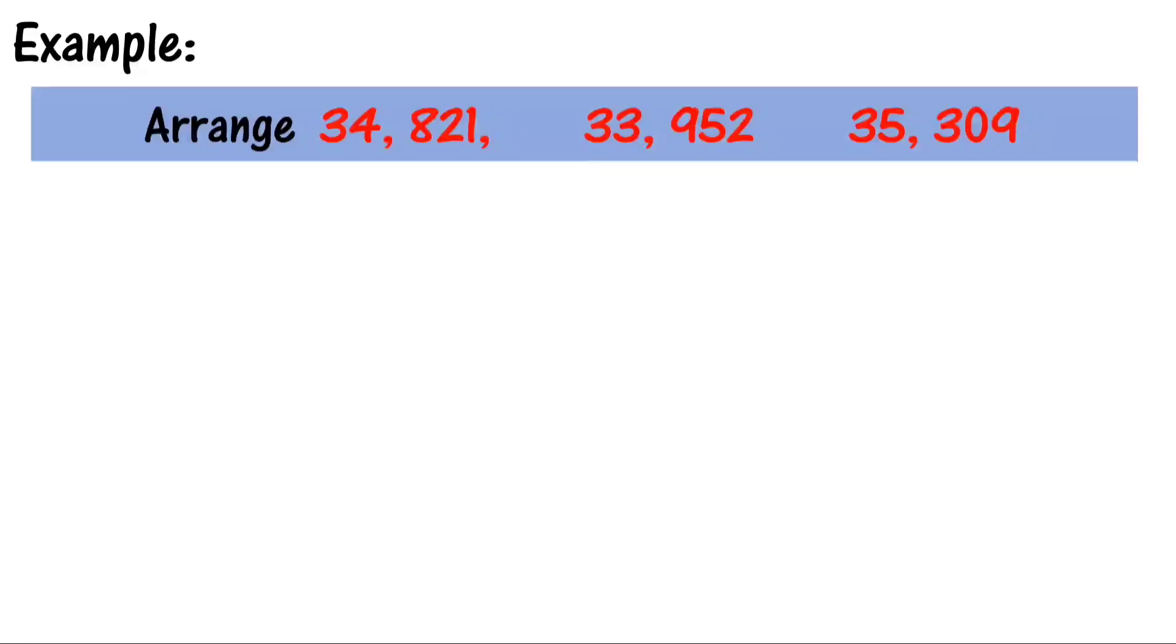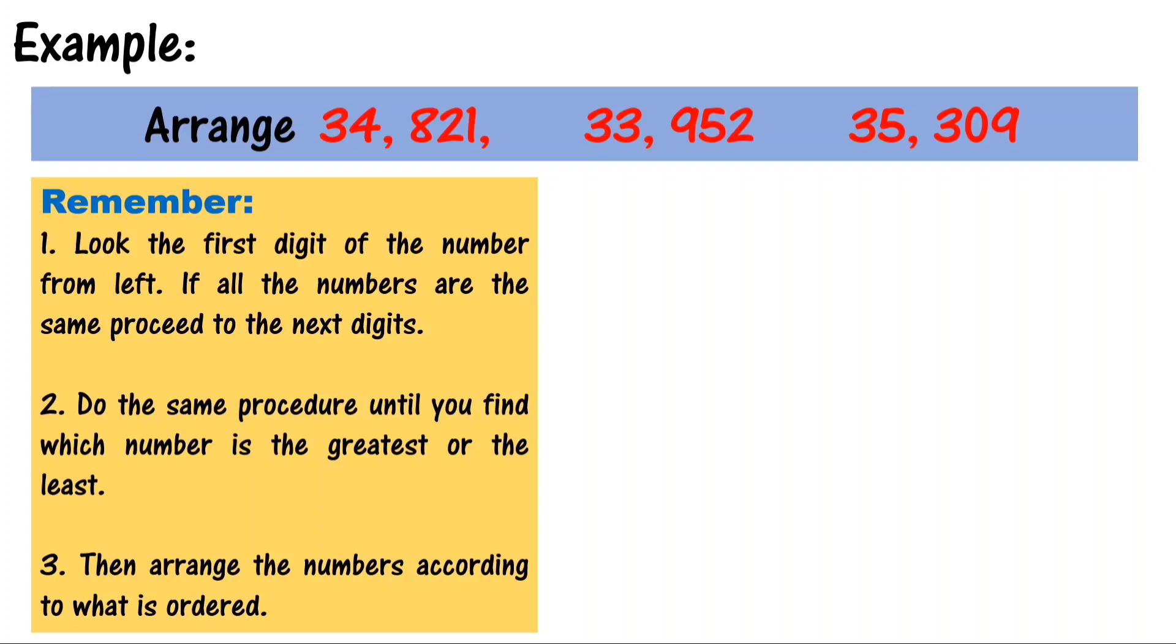Example: arrange 34,821, 33,952, and 35,309 from greatest to least. Remember, first, leave the first digit of the number from left. If all the numbers are the same, proceed to the next digits. Second, do the same procedure until you find which number is the greatest or the least. And third, then arrange the numbers according to what is ordered.